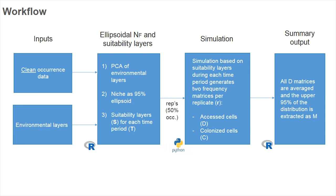During each replicate of the simulation, two matrices are created. One is a D matrix, which consists of the cells accessed by dispersal. The other is a C matrix, which consists of the cells that are colonized. At the end, all the D matrices for all replicates are averaged, the lower tail of the distribution of that average matrix is excluded, and we obtain our hypotheses of M.